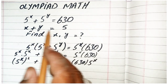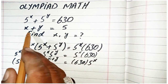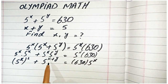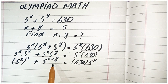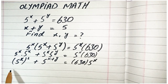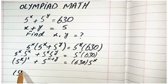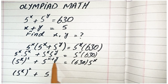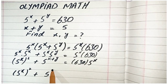Here, we recall the second equation: x plus y is equal to 5. We substitute x plus y equals 5 into the equation, giving 5 power 2x plus 5 power (x plus 5) is equal to 630 times 5 power x.